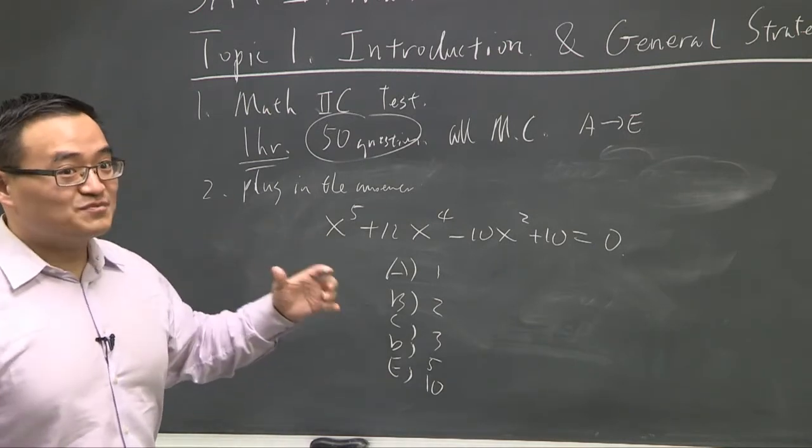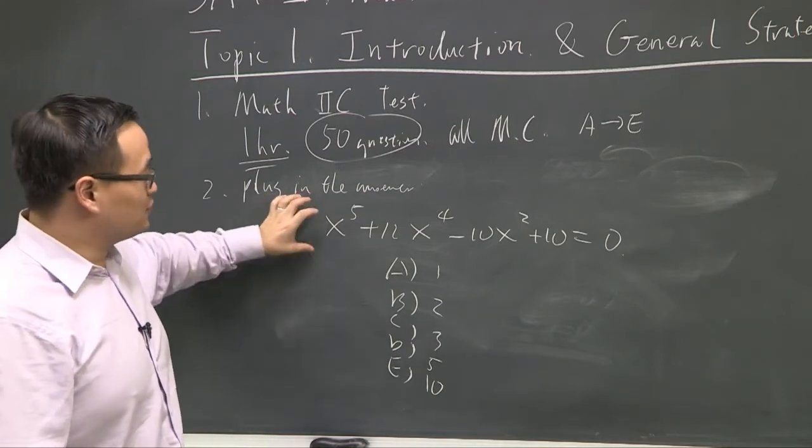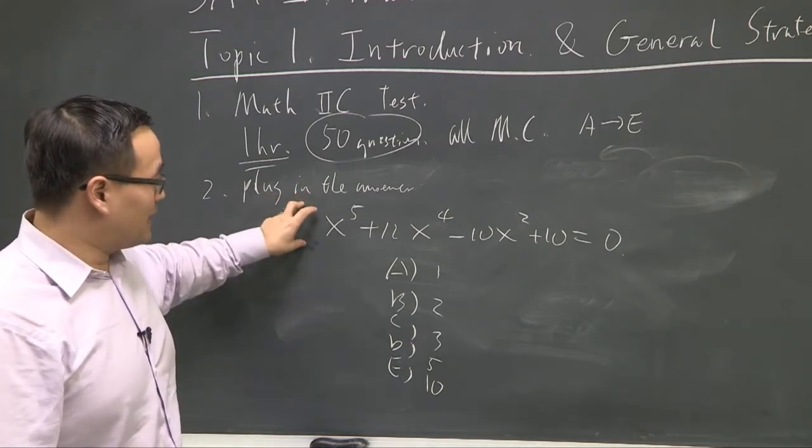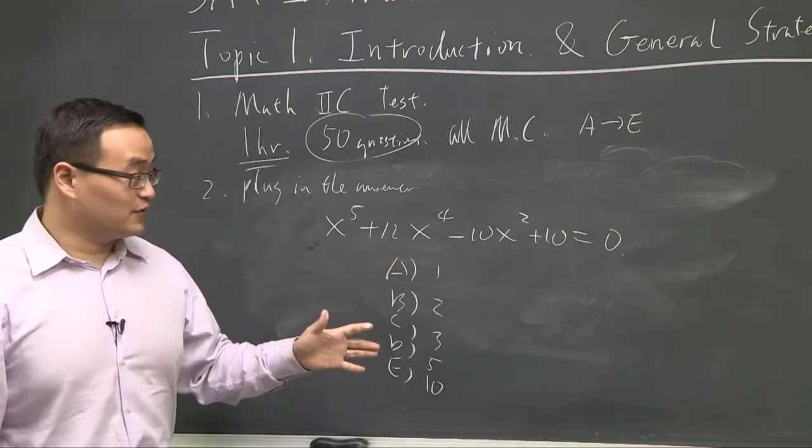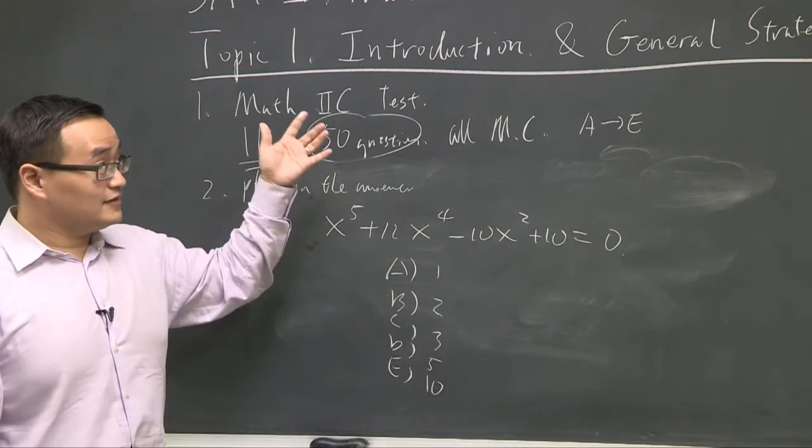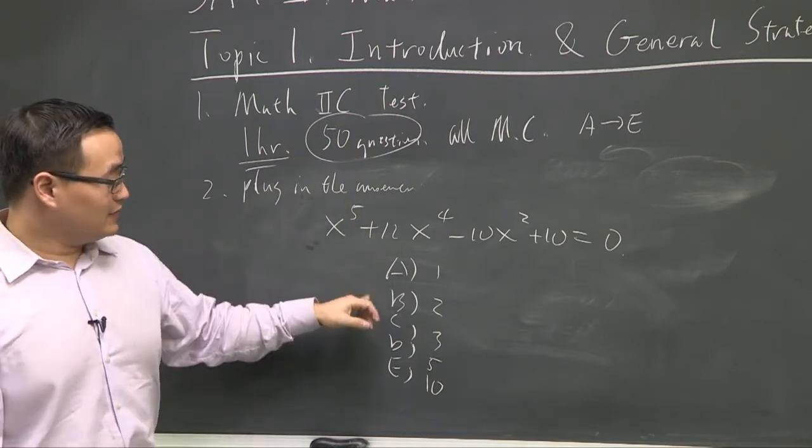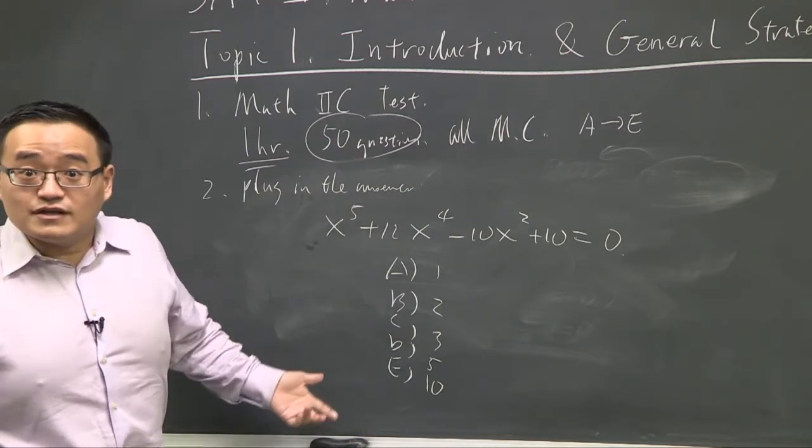In your math class, because you want to know how to factor this, how to reduce this down to a binomial, right? And then you can actually use different equations to solve this. That's what you want to do. However, on the SAT too, you don't have that kind of time. And guess what? They gave you the answers here. So one of them must work. Where do you start?